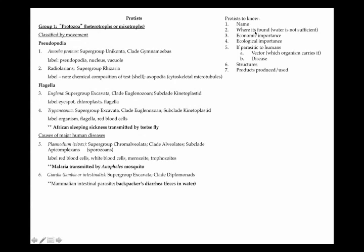Overall, the things we need to know for protists are: the name of the organism, where it's found — just saying 'water' is not sufficient, it needs to be cold water, warm water, salt water, etc. — economic importance, ecological importance, and if it's a parasite to humans, what vector carries it and what disease it causes. We'll also go over structures and products produced or used.